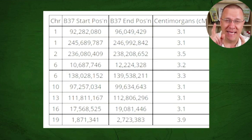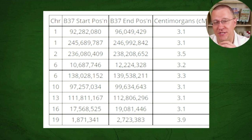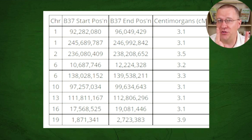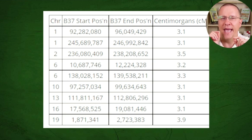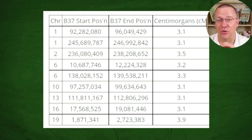In my case, I have a few matches that are just above 3 centimorgans, one that's almost 4 centimorgans, but nothing in the 5 centimorgan range. So, using the 1-to-1 tool, I can look at above-3-centimorgan matches, and when I do, I have 9 different segments that I match with this person.